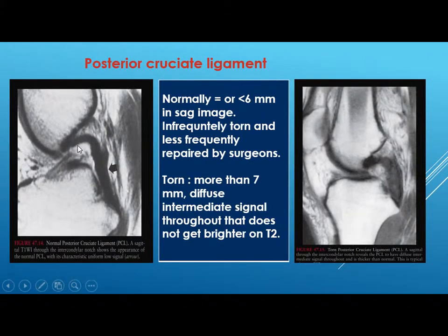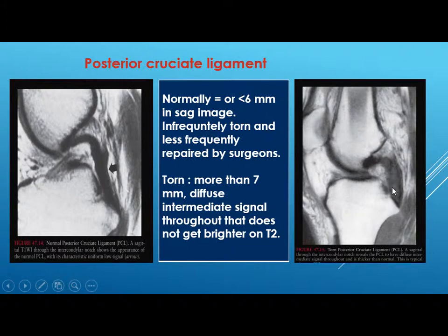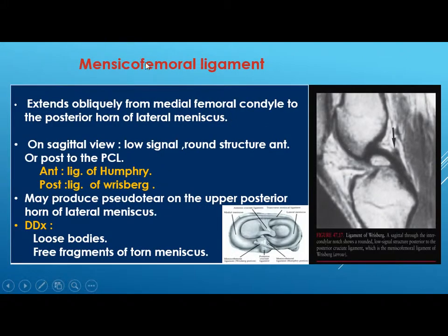The posterior cruciate ligament is uniformly low signal unlike the ACL, in which some signal is normal. The PCL is either equal to or less than 6 millimeters on sagittal image. It is infrequently torn, and even if it is torn it is less frequently repaired by surgeons. In this example the PCL is torn — it is thickened with diffuse intermediate signal and more than 7 millimeters.